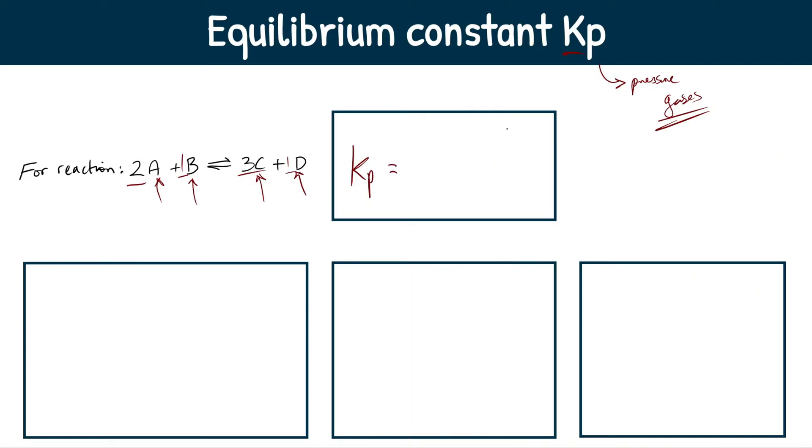Kp equals, now think back to Kc. Kc is just concentration of products over concentration of reactants raised to the power of the mole coefficients. So in this case, 2, 1, 3, 1. All we're going to do here is no square brackets, get rid of the square brackets.